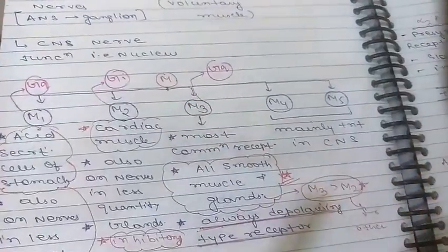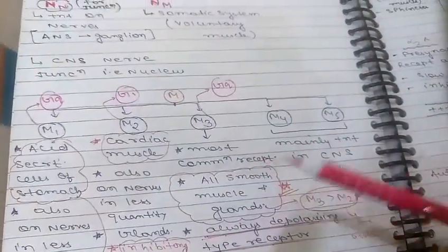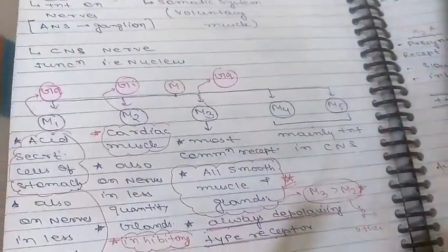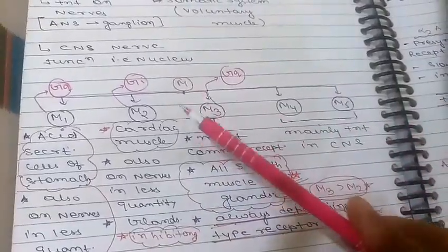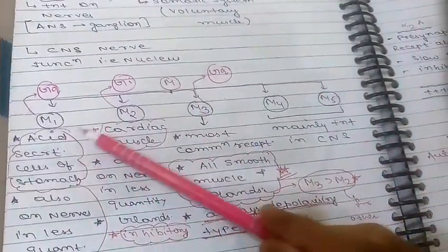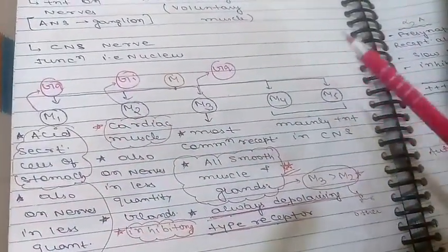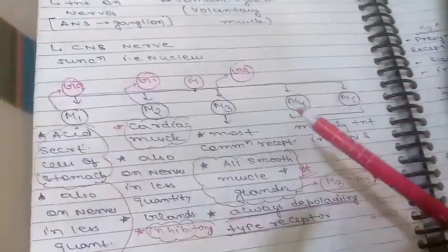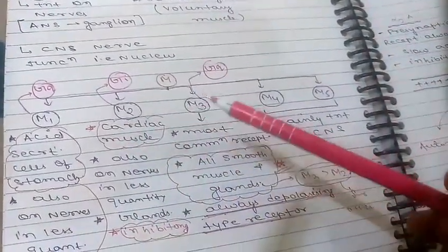In this video we are going to discuss muscarinic receptor types, where they are present, and how they work. Muscarinic receptors are divided into five types: M1, M2, M3, M4, and M5.